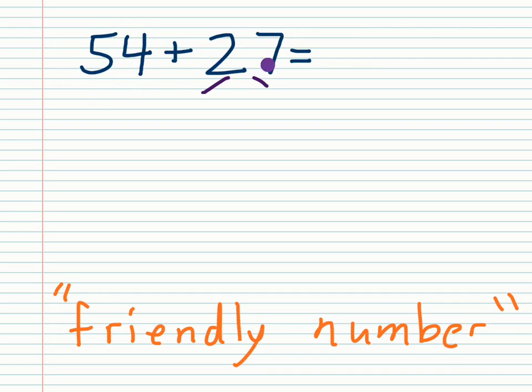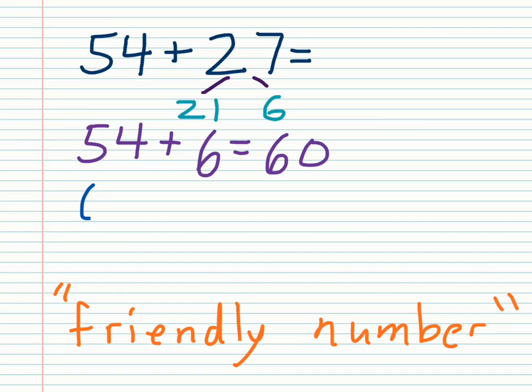I need 6 to get to 60, so I'll break 27 into 6 and 21. I'm going to add the 6 first to get to my friendly number. Once I get to that point, I just need to add the 21, which is easier now with my friendly number, and I have the answer. You could have kept 27 and broken up 54, did 50 and 4, or found a friendly number, but that's just a two-digit example of adding in parts.